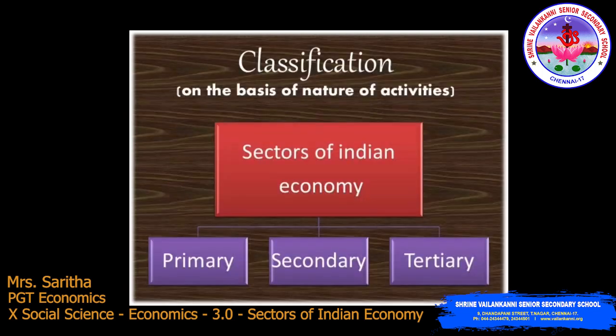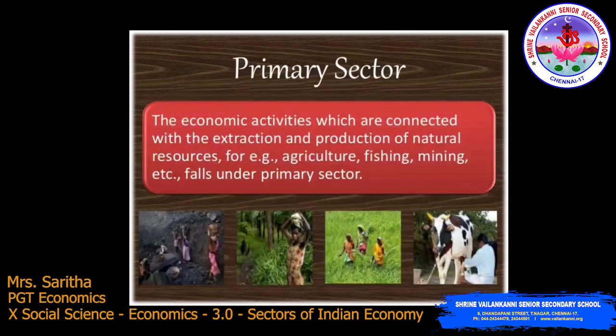Classification on the basis of the nature of activity gives us the sectors of the Indian economy — primary, secondary, and tertiary. The primary sector refers to economic activities which are connected with the extraction and production of natural resources. For example, agriculture, fishing, and mining fall under the primary sector.